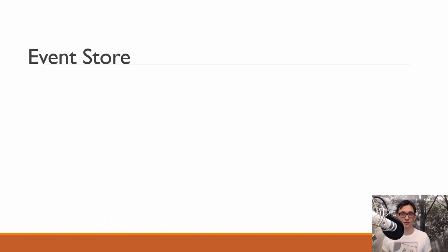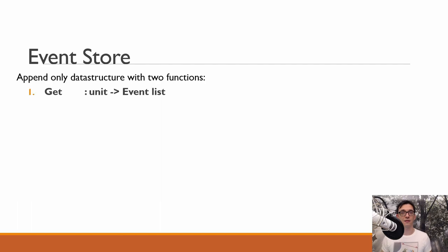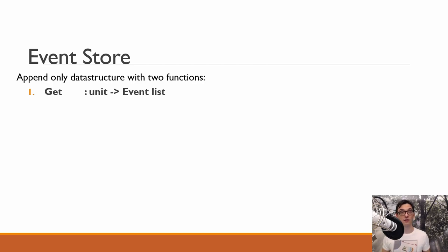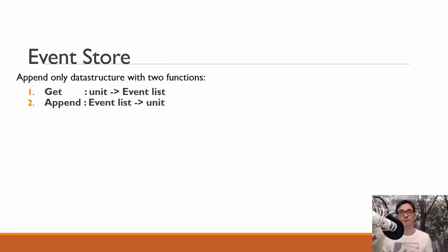Now let's move to the not so simple part of this video — implementing an actual event store. What is an event store? It's just a data structure that consists of two functions. The first function is called GET, which takes a unit parameter and returns a list of events currently stored in the event store. The second function is APPEND, which takes a list of events and returns nothing, because internally it appends all those events to the current state of the event store. There is no function that can mutate or delete events — this is not possible in general in event sourcing.